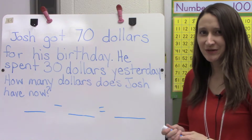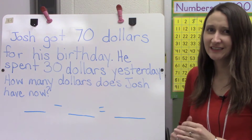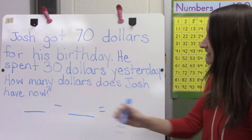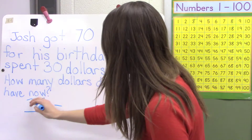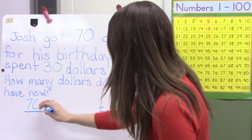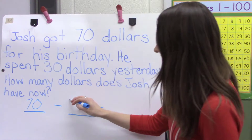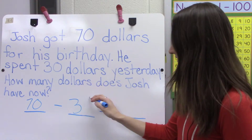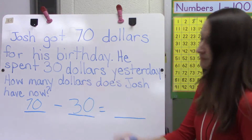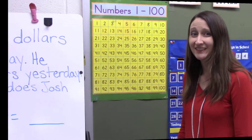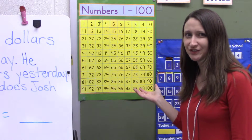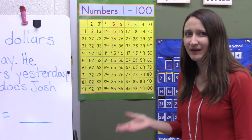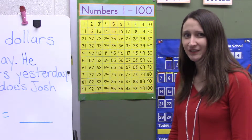Now I'm going to write in the equation for today, and I know that it is 70 minus 30. Today I'm going to use the hundreds chart to solve 70 minus 30.